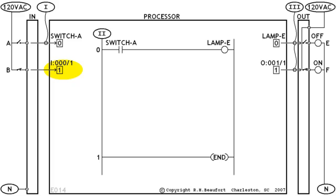And the address will be I:000/1. The transfer of information from the switch to the bit will be handled on step number 1 of the scan cycle. And now switch B is available to use in our examples. And now let's add another simple rung.